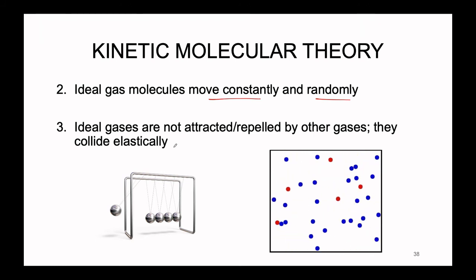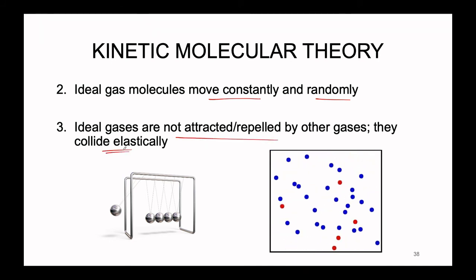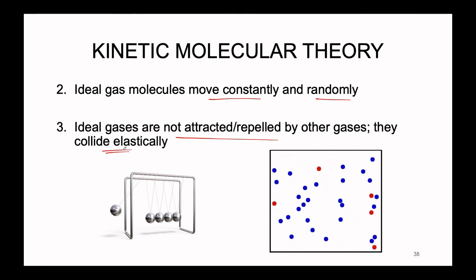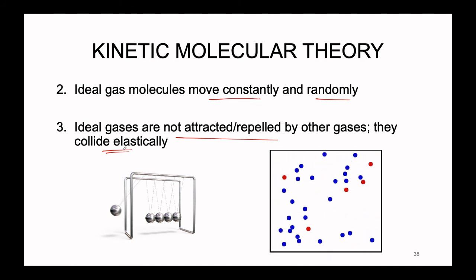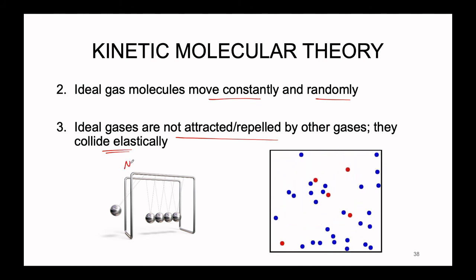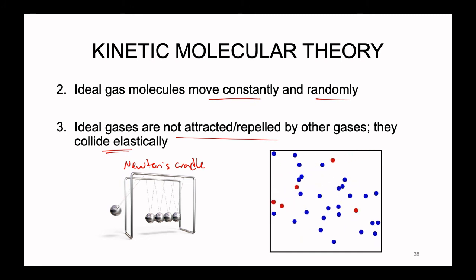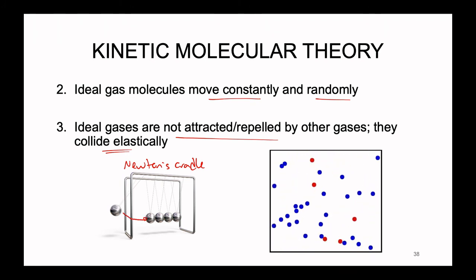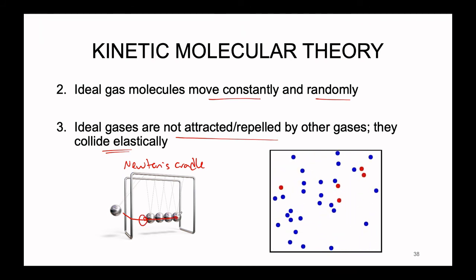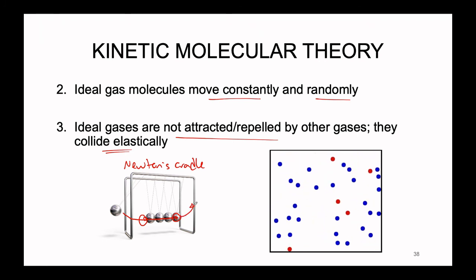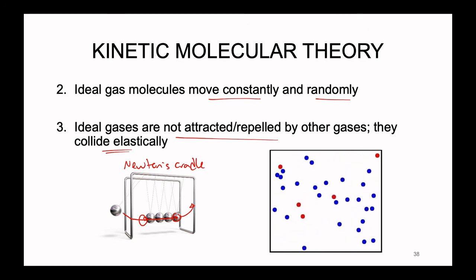Point three: ideal gases are not attracted nor repelled by other gases — they collide perfectly and elastically. We can think of this like billiards or Newton's cradle, where one ball comes down and hits the rest of the set. It stays in place, but as a result of the energy transferring through the set, the last ball swings upward and back down. This back-and-forth motion is what it means to collide elastically — energy is conserved and transferred perfectly.